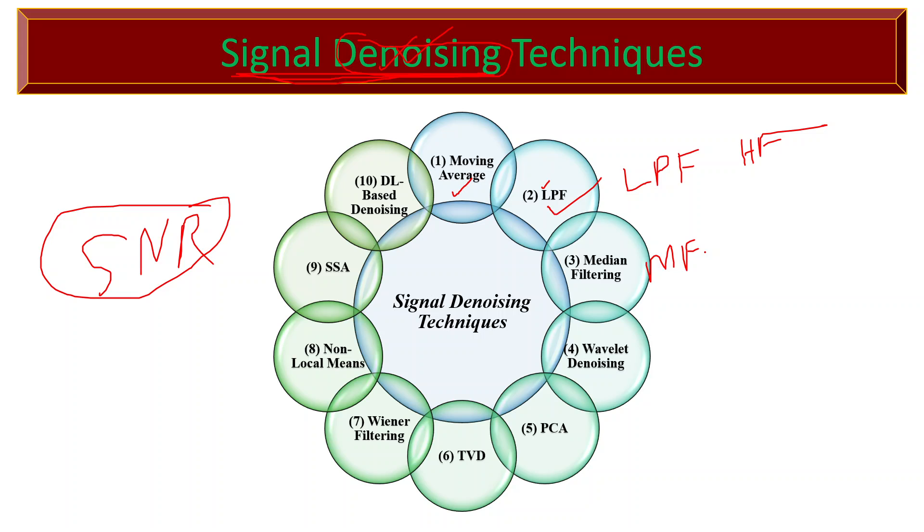Median filtering replaces each data point in the signal with the median of neighboring points within a specified window. This technique is effective in removing impulse noise while preserving signal edges.